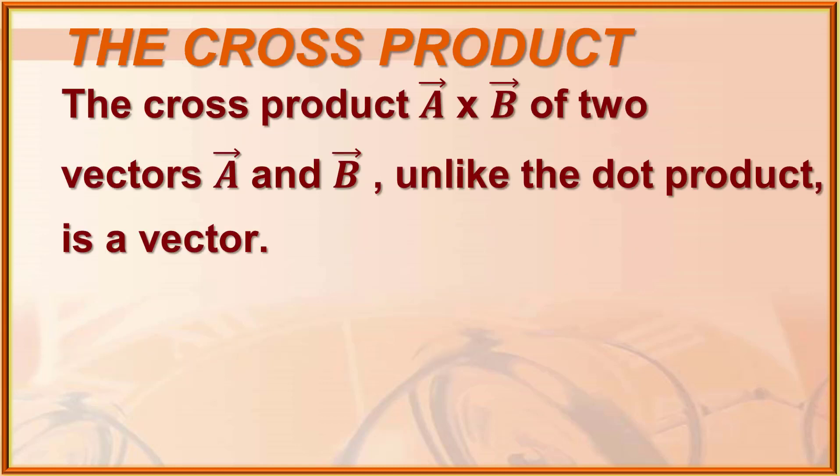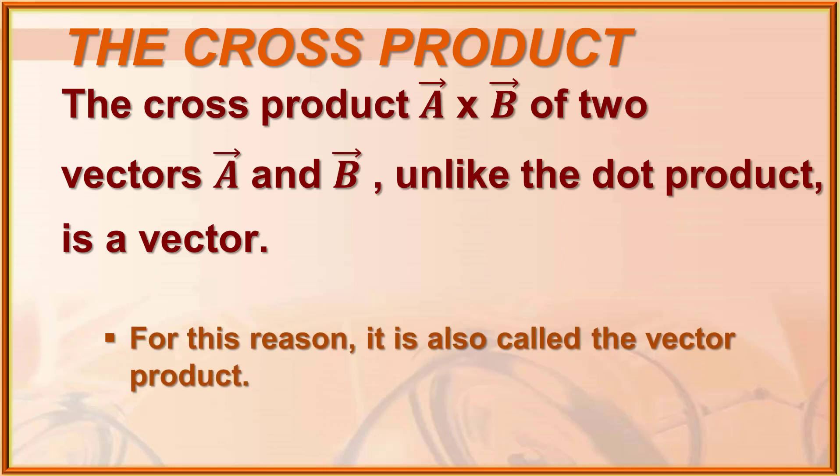The cross product of two vectors a and b, unlike the dot product, is a vector. If we multiply two vectors and get a vector quantity as the result, this is known as the cross product — also called the vector product. Sometimes we need a scalar result and sometimes a vector result, so whenever we need a vector quantity as the resultant, we use the cross product.